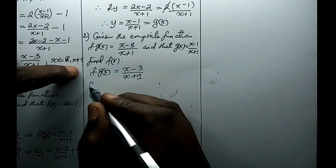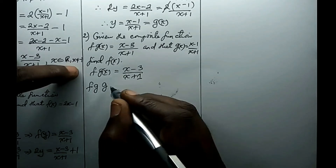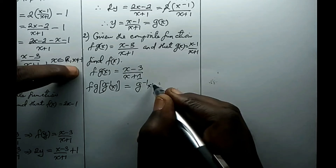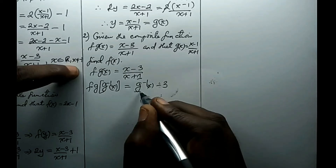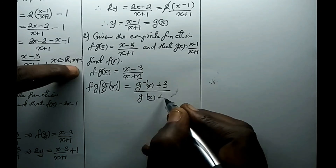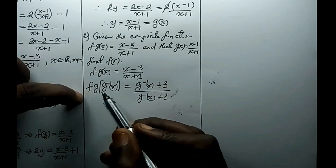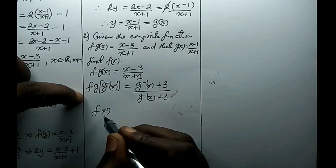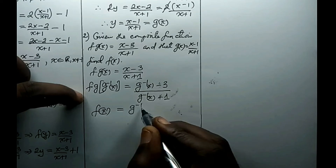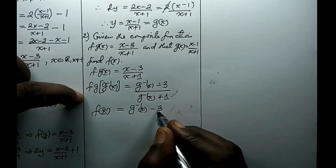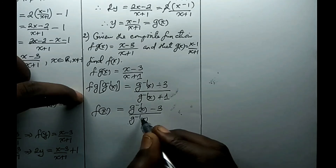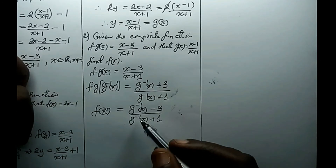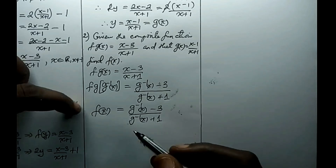So f of g of g inverse of x equals g inverse of x minus 3 all over g inverse of x plus 1. What we notice is that g of g inverse of x reduces to x, so we end up with f of x on the left-hand side equals g inverse of x minus 3 all over g inverse of x plus 1. Our task now is to find g inverse of x and substitute on the right-hand side, which will give us f of x directly.